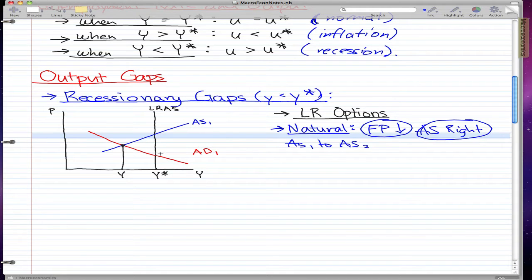So then our AS moves right to AS2. In addition to this, price falls. When price falls, then money demand also falls because we need less money to enjoy the same price, and interest rate falls.